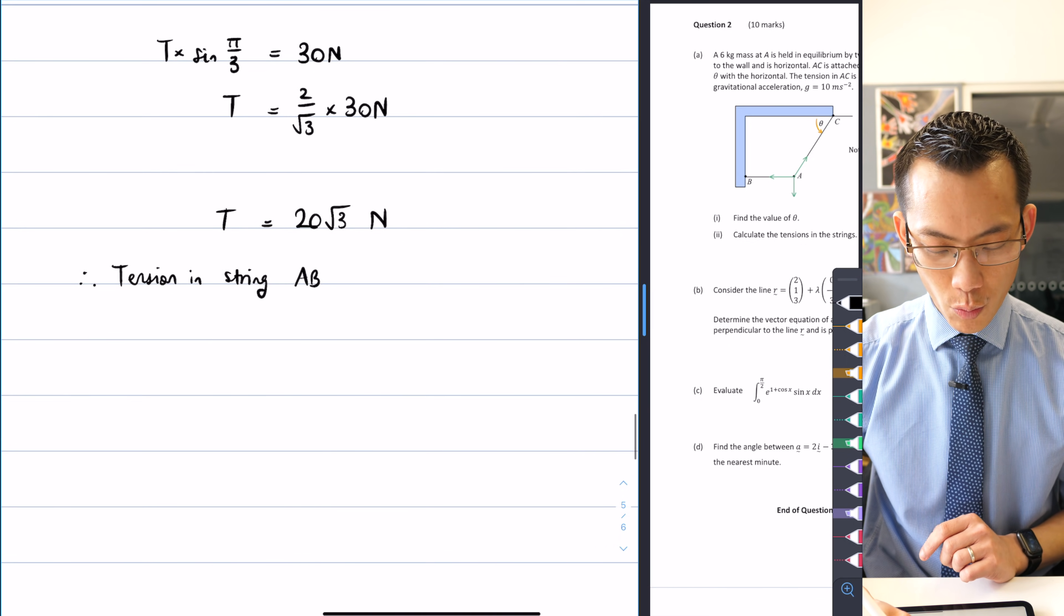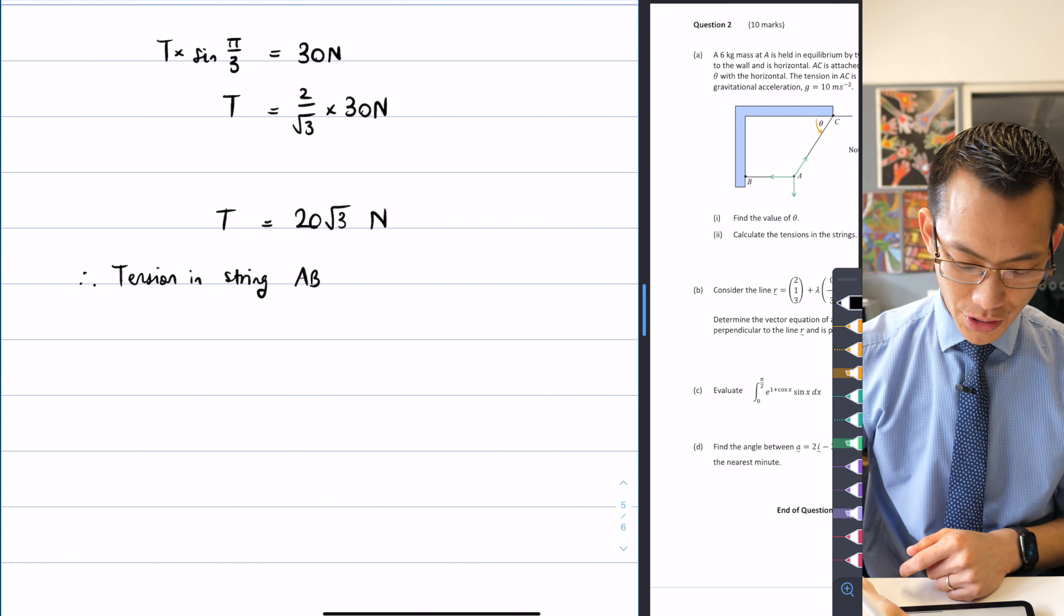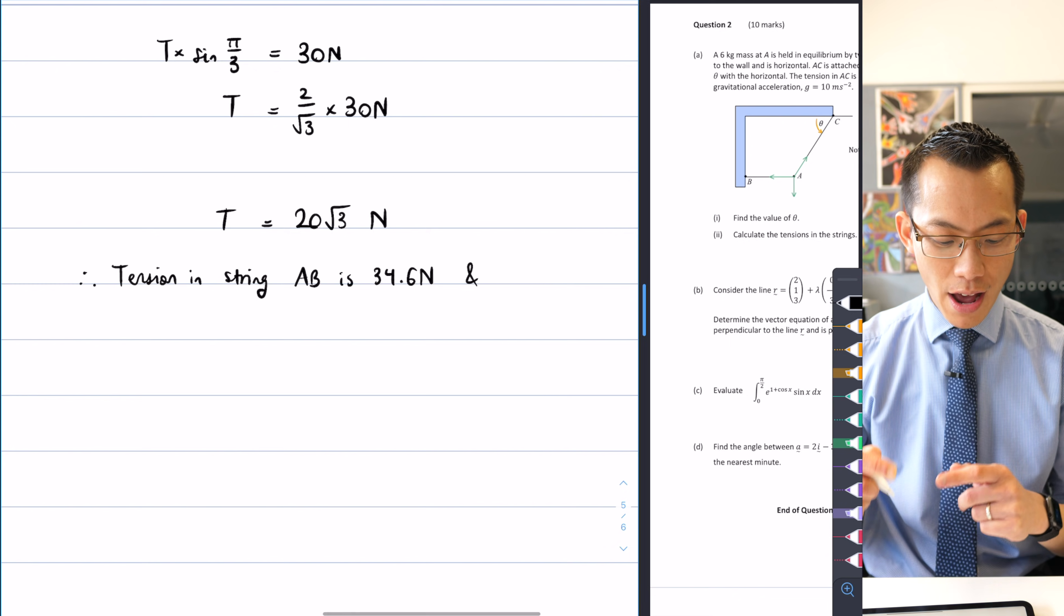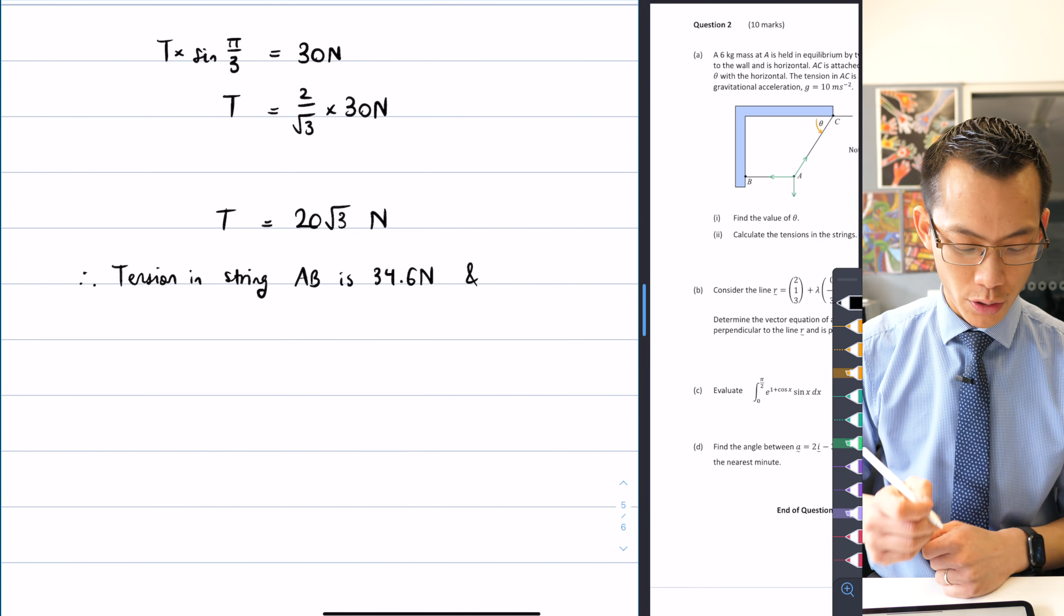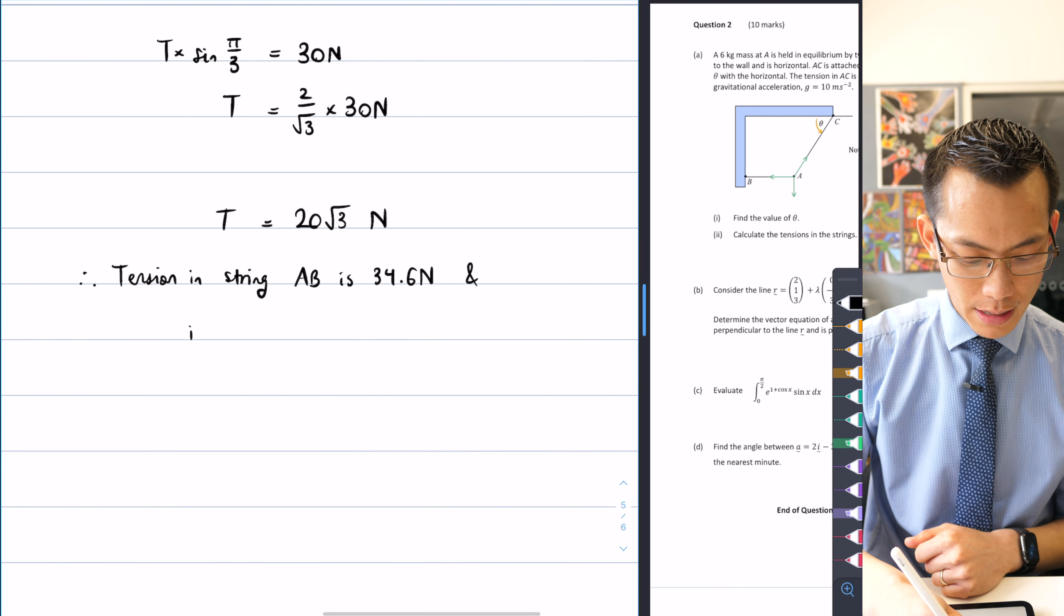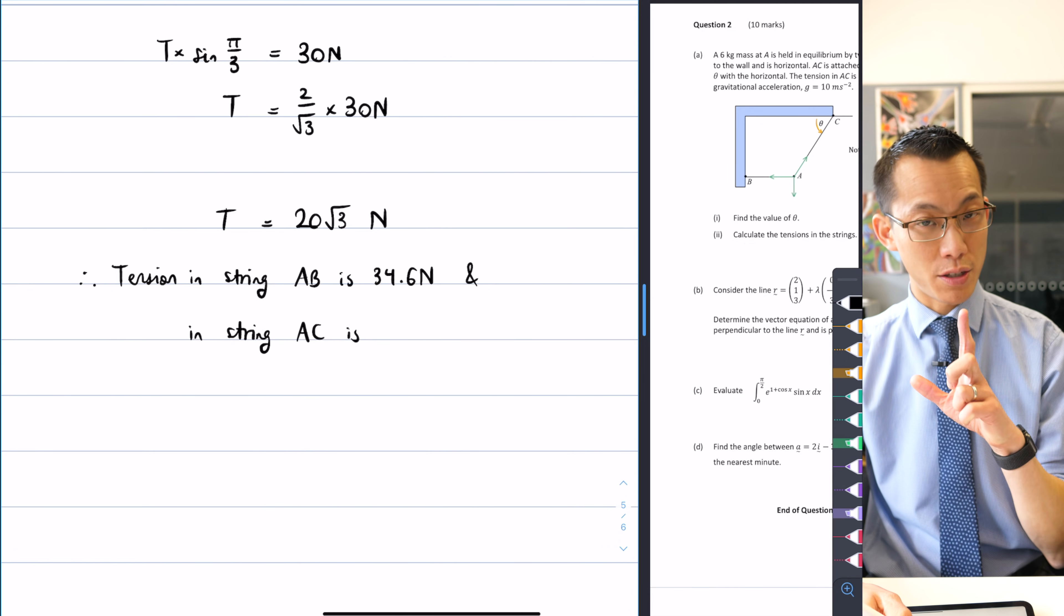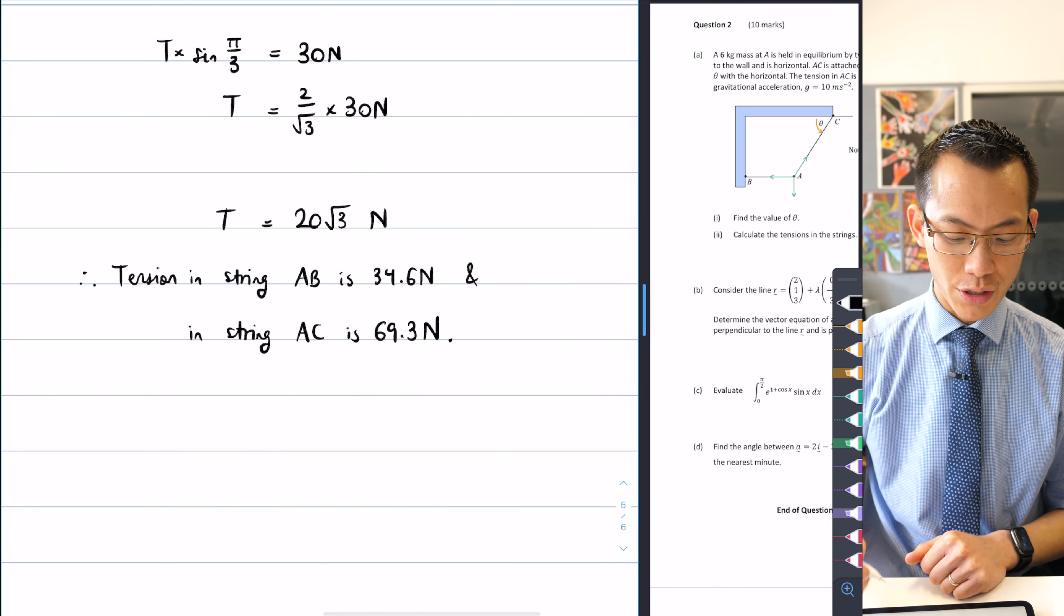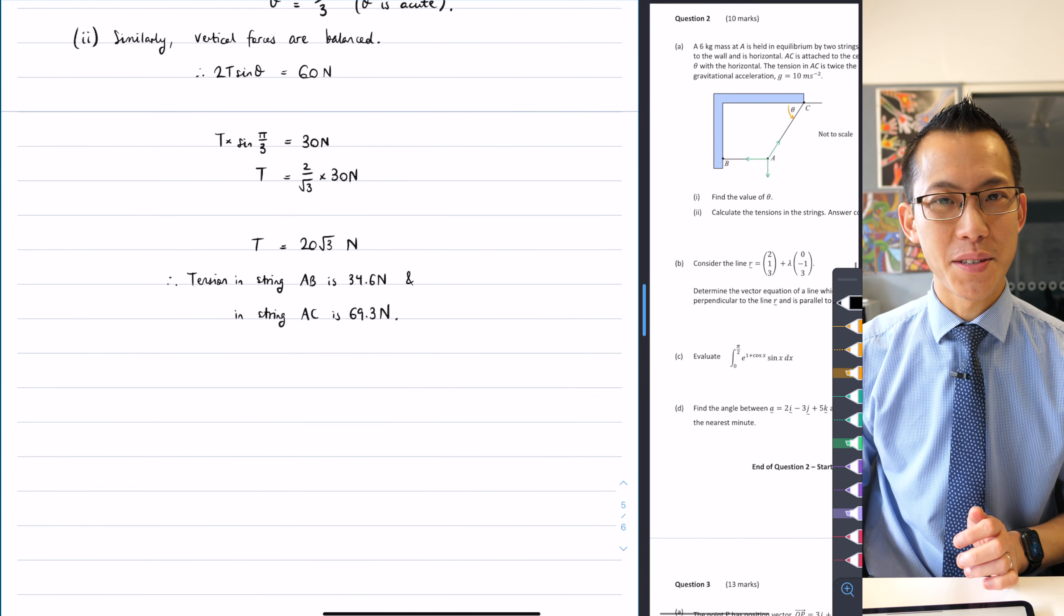I want that to one decimal place, which I think you'll find if you evaluate, because root 3 is like 1.7 ish, you're going to get 34.6 newtons. I also know that the tension in the other string is double this, so I'm going to take that 20 root 3 number, double it, give me 40 root 3. Tension in string AB is 34.6 newtons, and in string AC is, and when you double that, just be careful don't round off early, you actually get 69.3 newtons, and that's all to one decimal place. Okay, so that was that mechanics question.